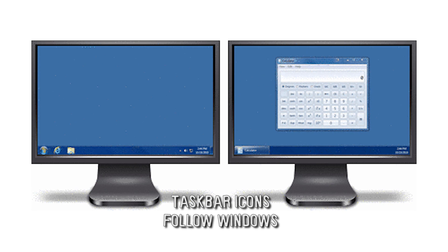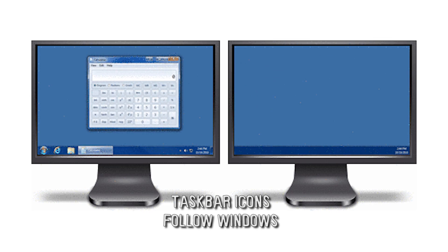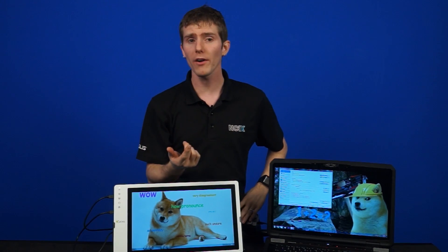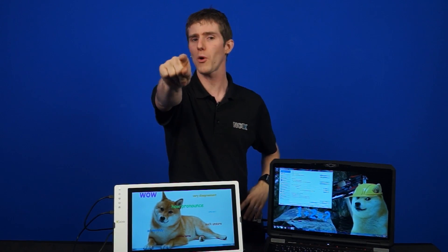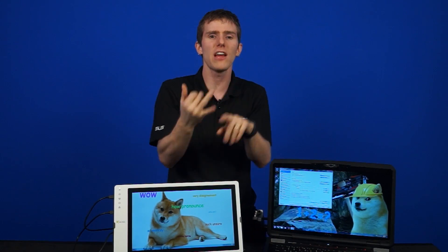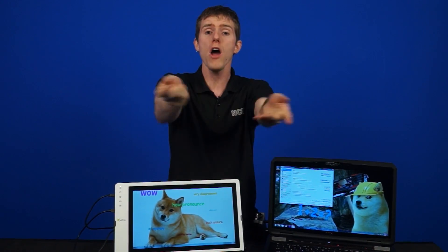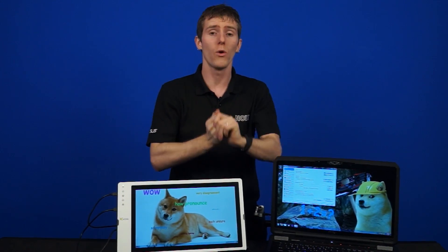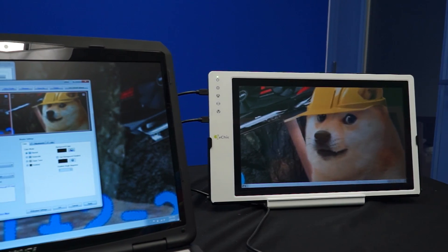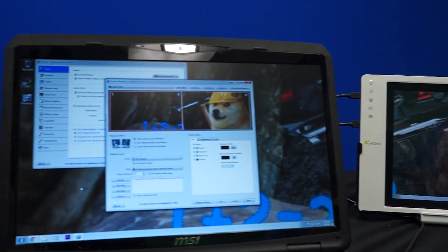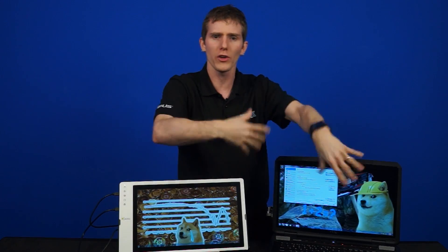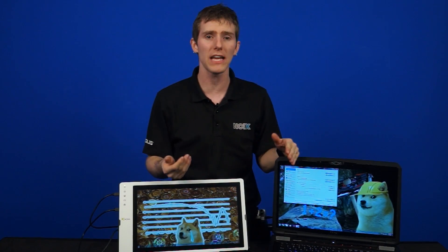Third-party start menu solutions are supported, so if you've got Classic Shell, Start8, etc. on Windows 8 or Windows 7, DisplayFusion will clone those to multiple monitors as well. You're also getting a full tray clock and show-desktop buttons on all your taskbars, and you can independently move taskbars to different positions on each monitor.